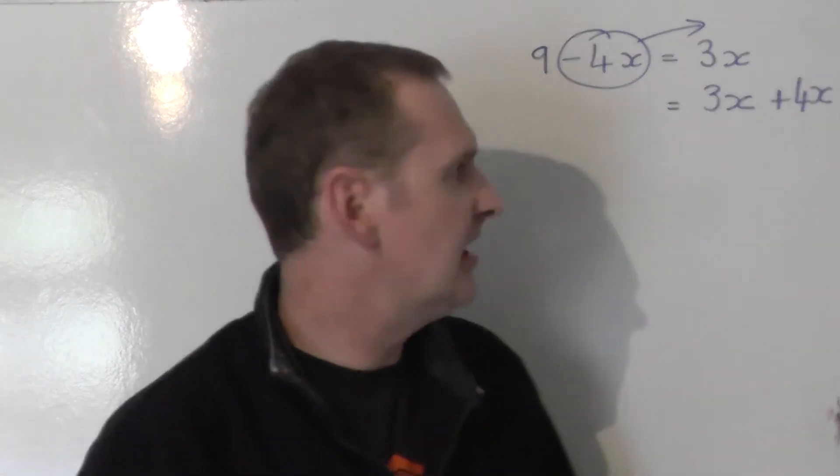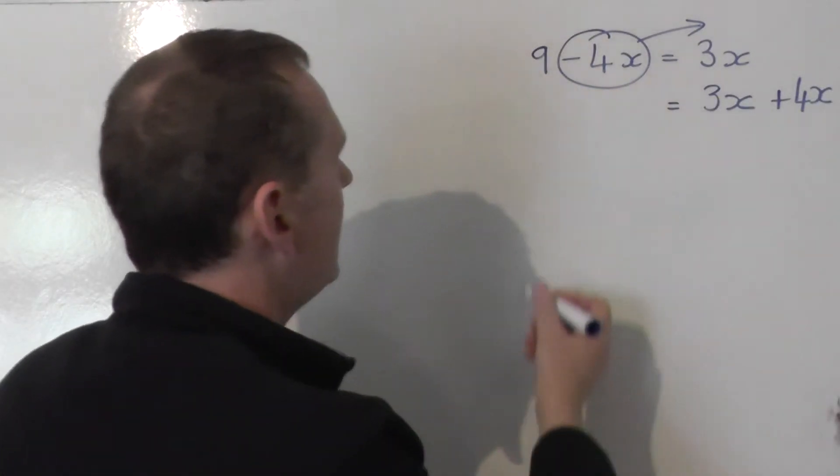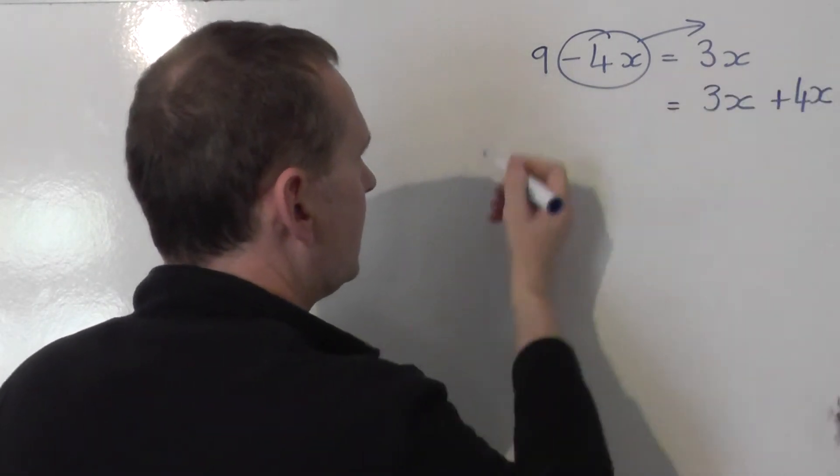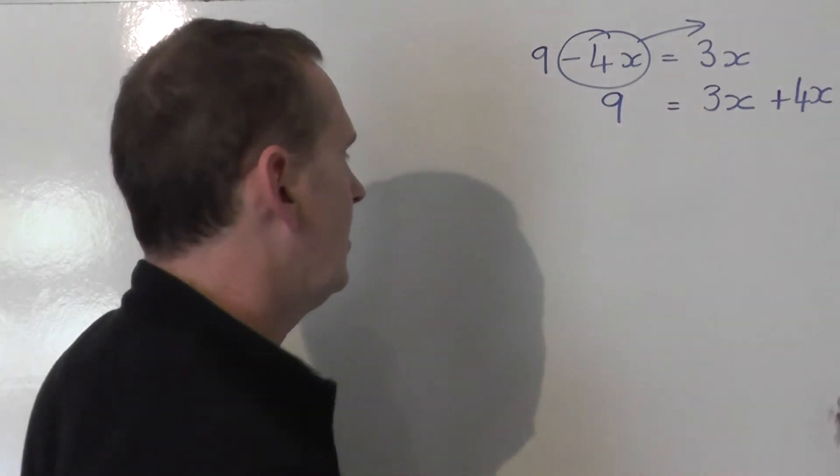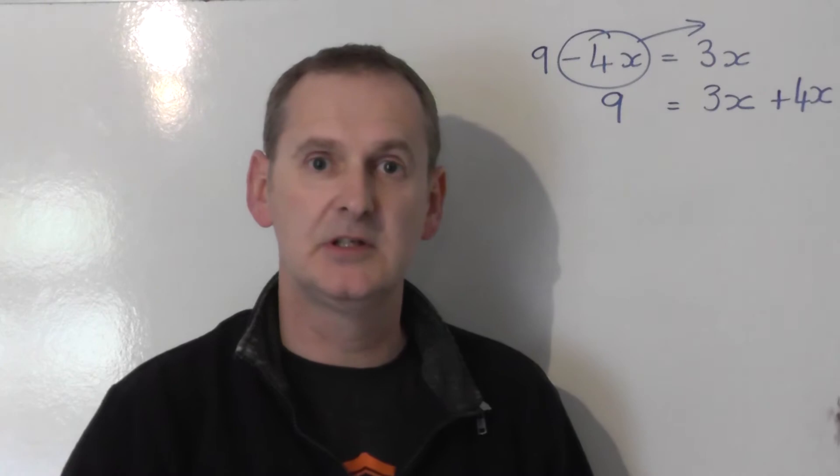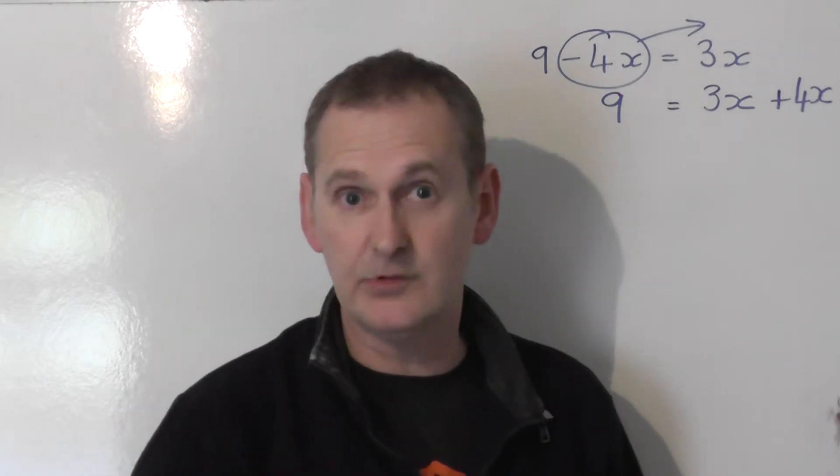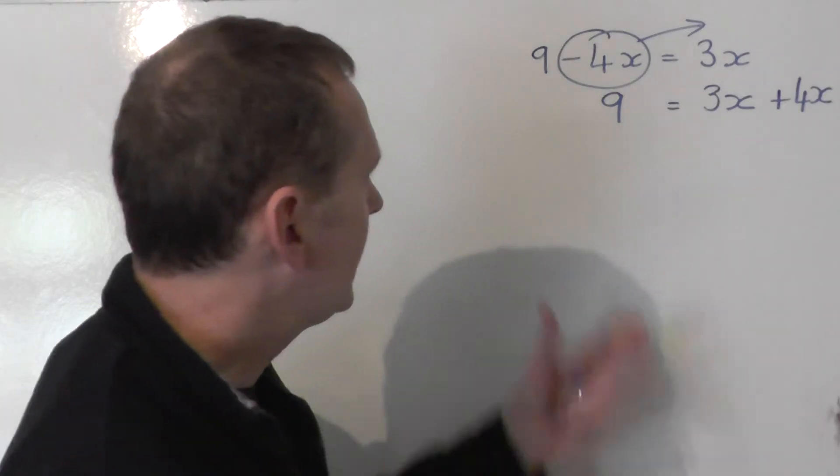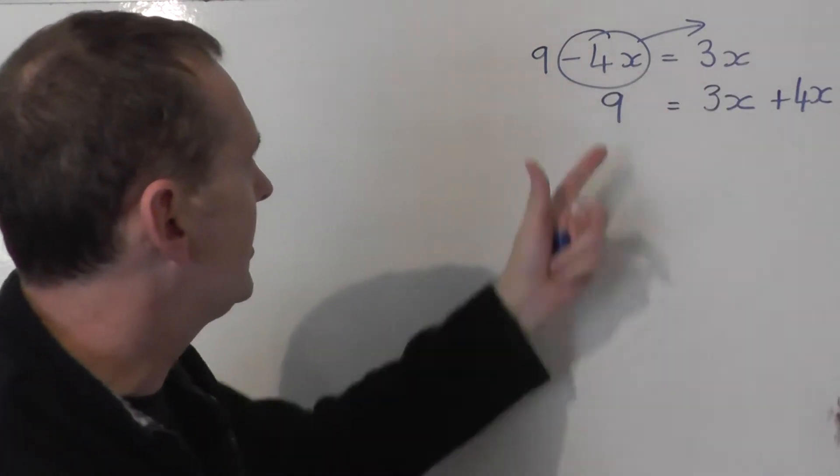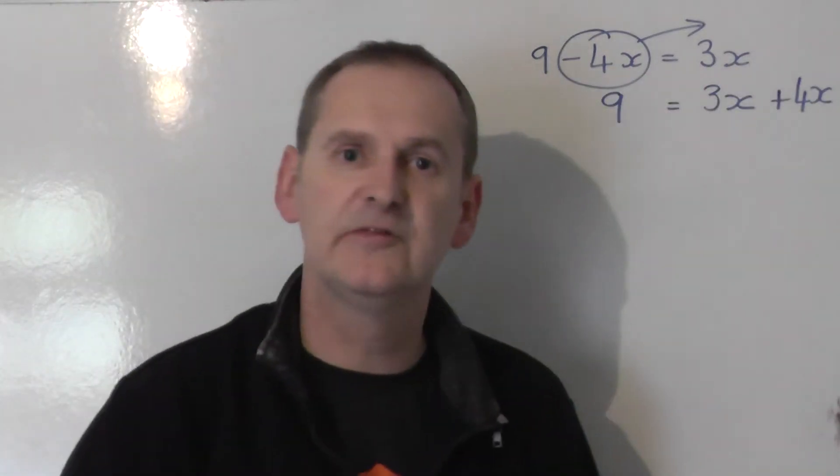So on the right-hand side, you get 3x plus 4x. And the 9 is the only number term, so it just stays on the left-hand side. It doesn't swap sides, doesn't swap sign, stays as 9. So if 9 minus 4x equals 3x, it's true to say that 9 equals 3x plus 4x.